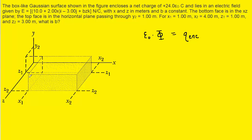The diagram draws this box-like Gaussian surface, and we are told that inside of that surface is an enclosed charge equal to positive 24 times the constant epsilon-naught. We can go ahead and plug in 24 epsilon for this enclosed charge.